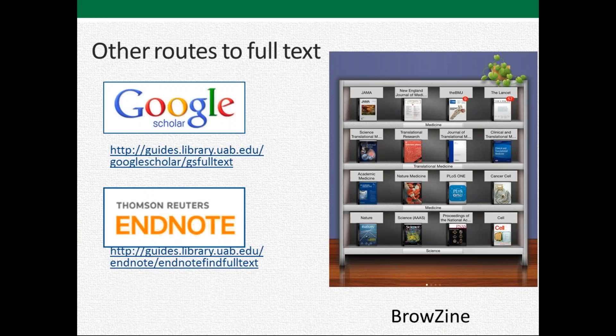Other routes for full text include Google Scholar — I particularly like to use it for finding specific items I'm looking for, like a particular article title. EndNote can also be set up to find full text, not only what's free but also linked through what the library subscribes to on your behalf. There's a link on these slides that will tell you how to set up EndNote to do that, and we can help you with that too. Browzine is another app available to get full text on your mobile device, and we make that available to you as well.